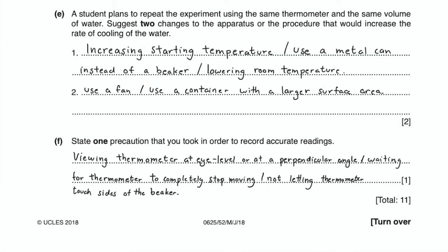The last question asks us to state a precaution we took to record more accurate readings. The answer can be viewing the thermometer from eye level or perpendicularly, waiting for the thermometer to completely stop moving before recording temperature, or not allowing the thermometer to touch the sides of the beaker.